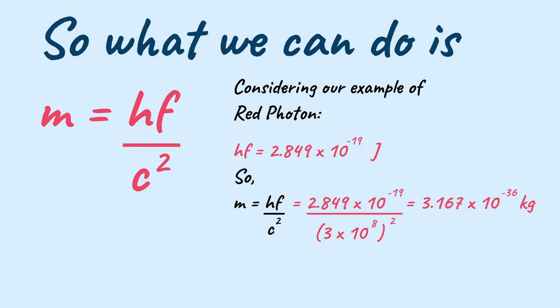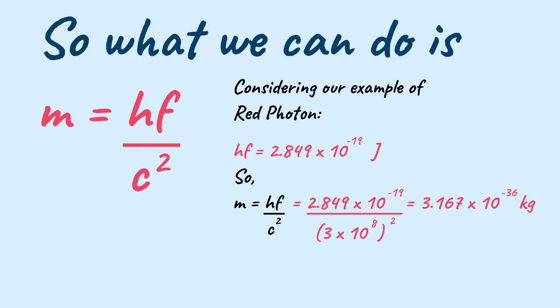And when we do the calculations we get the final answer as 3.167 into 10 to the power minus 36 kilograms. Congratulations you have just calculated mass of a photon. Boom! That's wrong! Photons are massless.